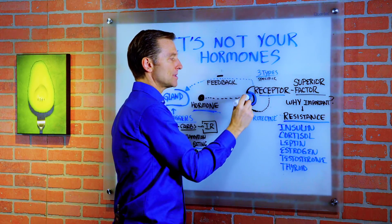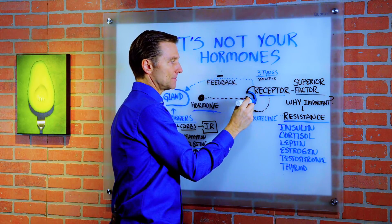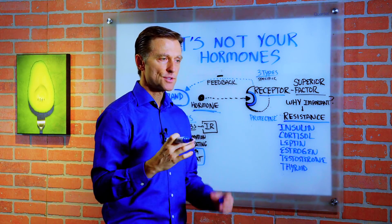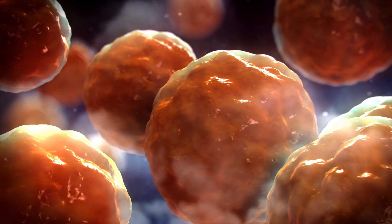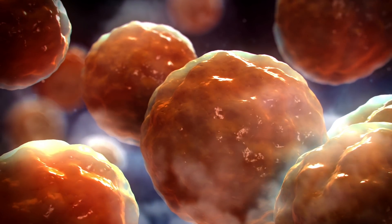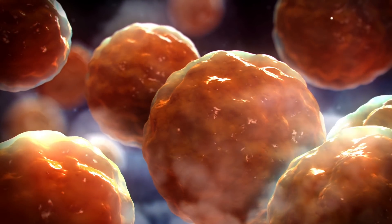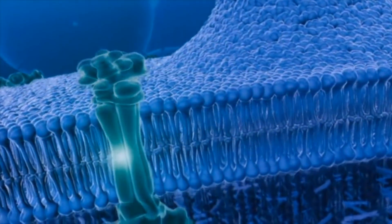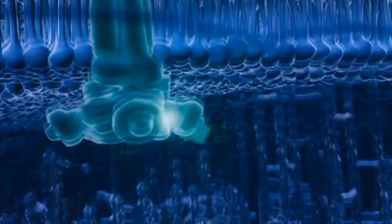There are three types of receptors. You have receptors on the surface of the cells — membrane receptors — and you have receptors inside the cell in certain places.